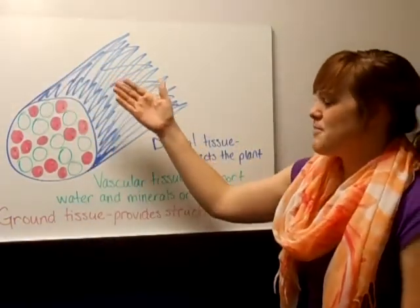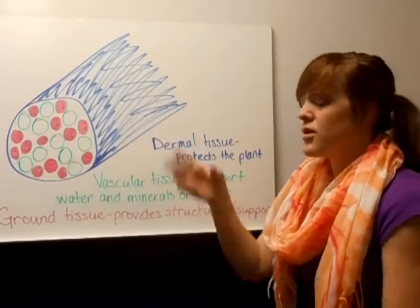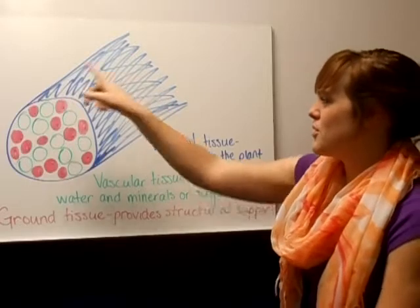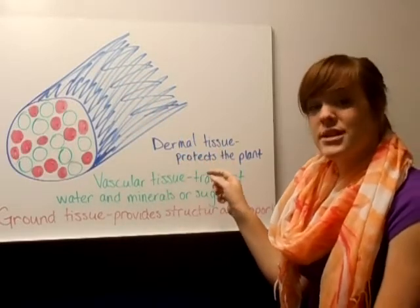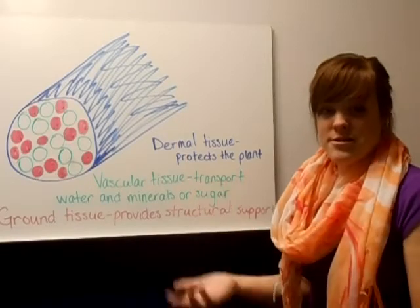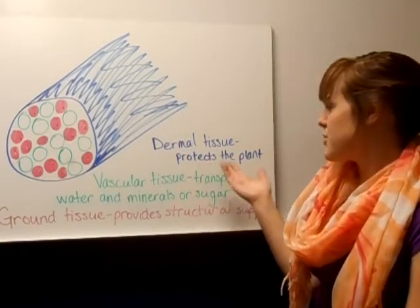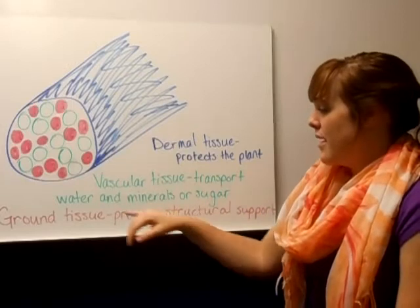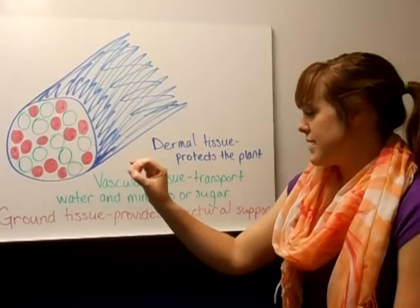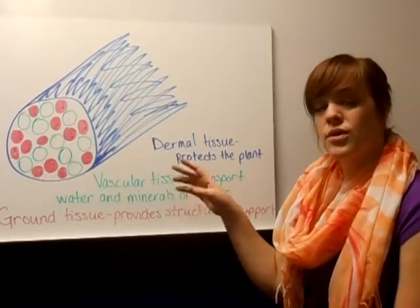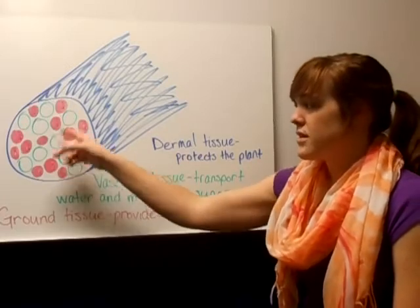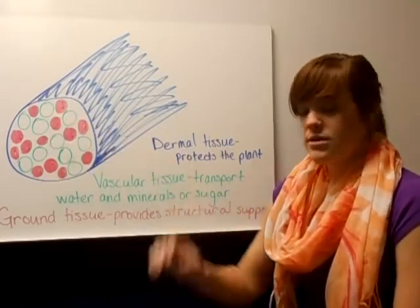This would be what the inside of a stem or a trunk would look like. The blue outside part is called the dermal tissue, in the same way that the outside of our skin is our dermis. So the dermal tissue protects the plant. The vascular tissue are the holes that are not filled in, and they transport either water and minerals or sugar to different parts of the plant. So these are the transportation tubes.